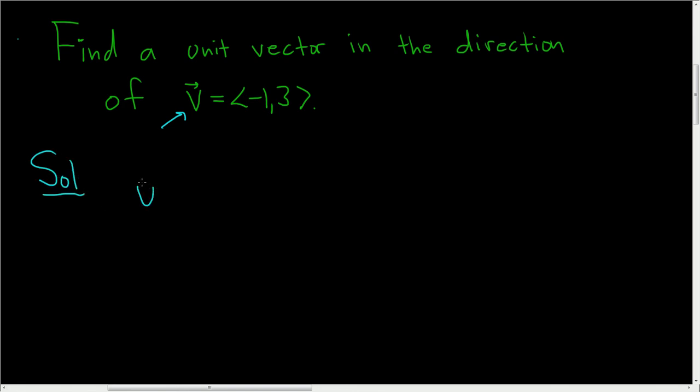So there's a formula. Let's call our unit vector u. And this is equal to the vector v divided by the magnitude, or norm, of v.